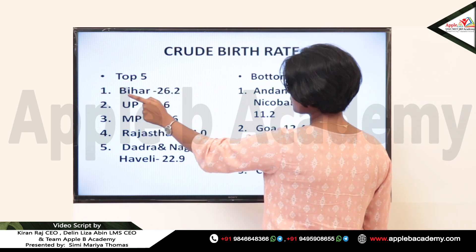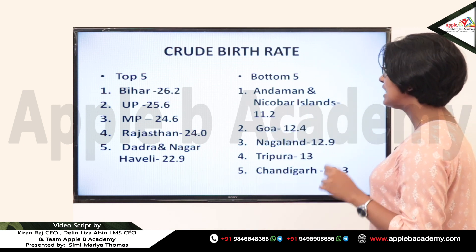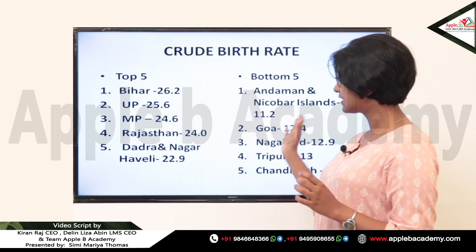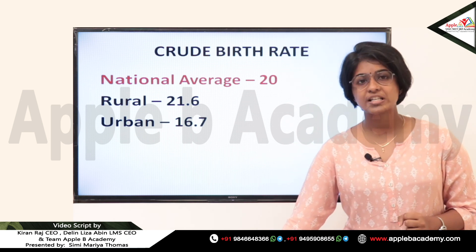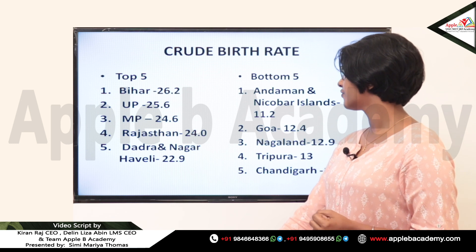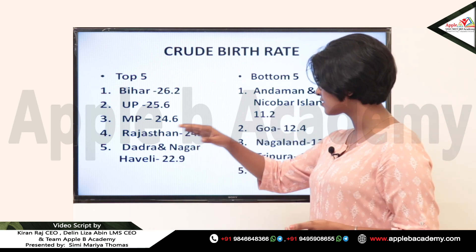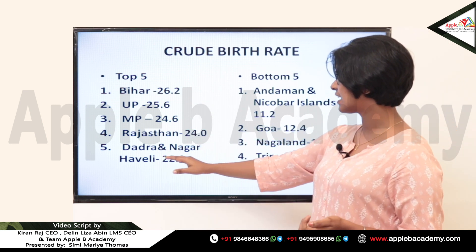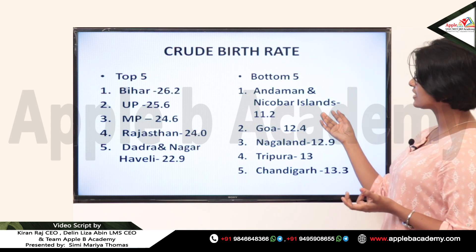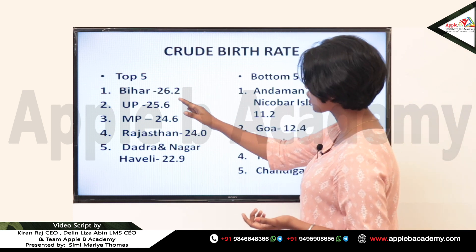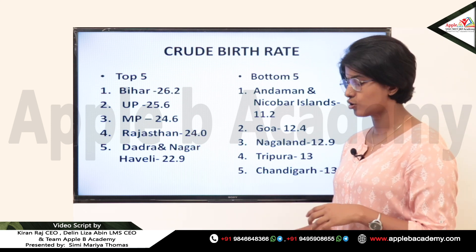In the top five, Bihar has the highest number of live births relative to total population, while Andaman and Nicobar Islands has the least. The national average for crude birth rate per SRS bulletin May 2020 is 20. State-wise, Bihar tops the list and Goa is in the bottom; union territory-wise, Dadra and Nagar Haveli tops the list and Andaman and Nicobar Islands is at the bottom. It is advisable to know state-wise and union territory-wise rankings separately.